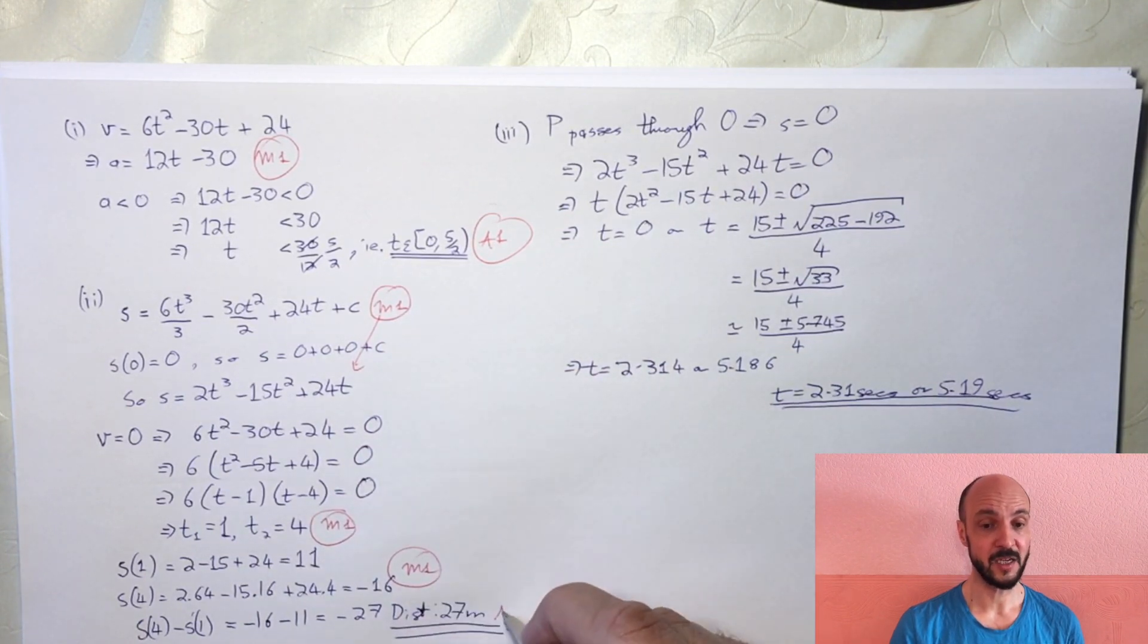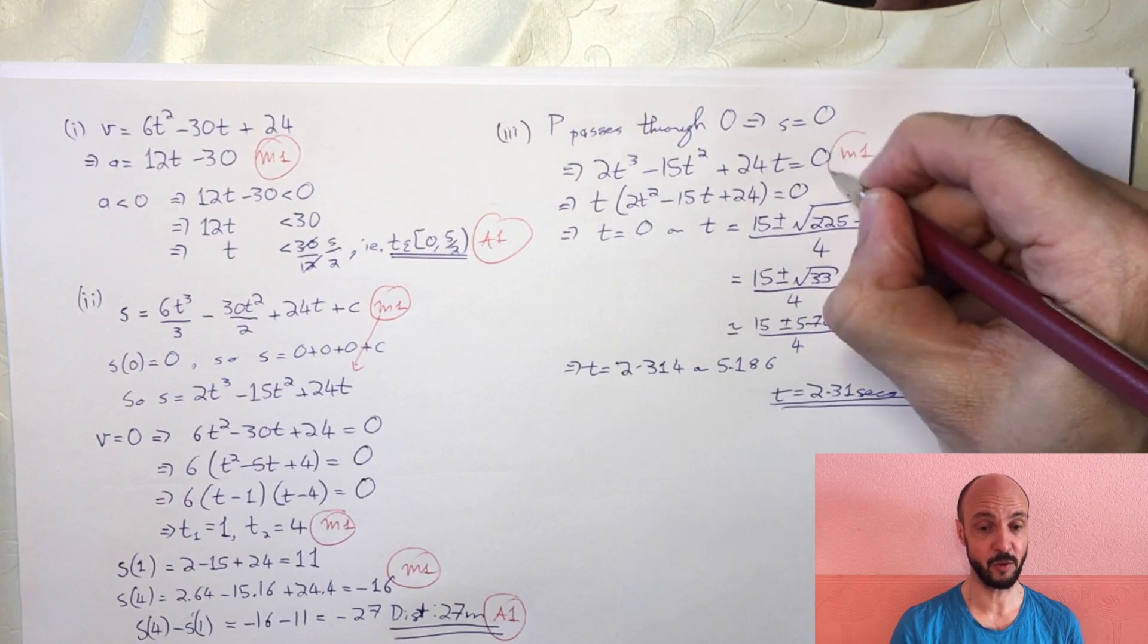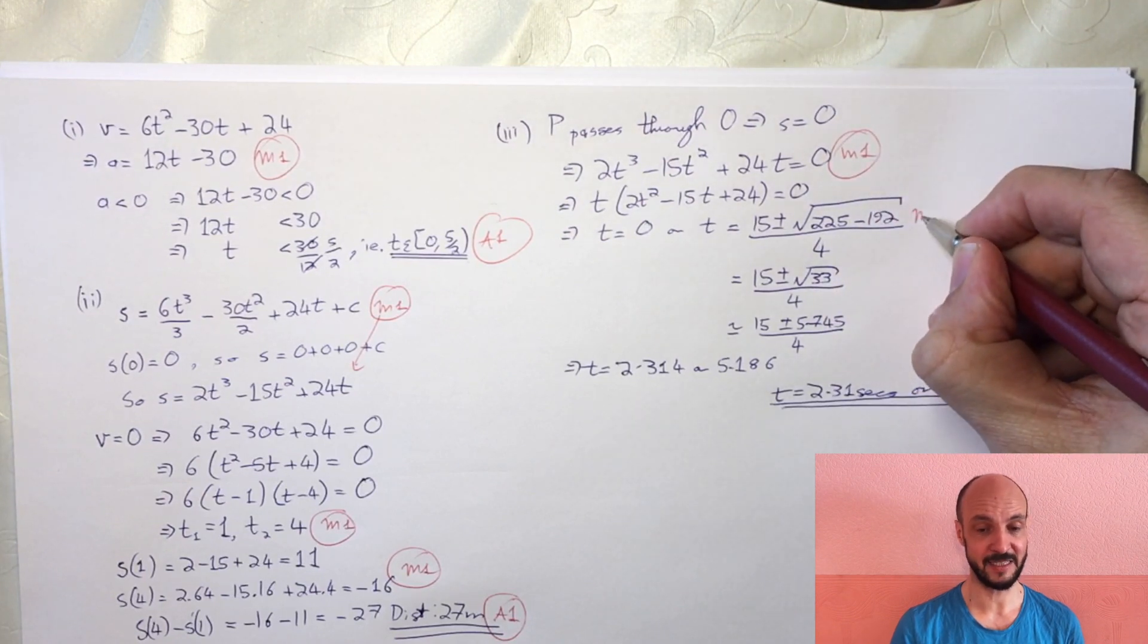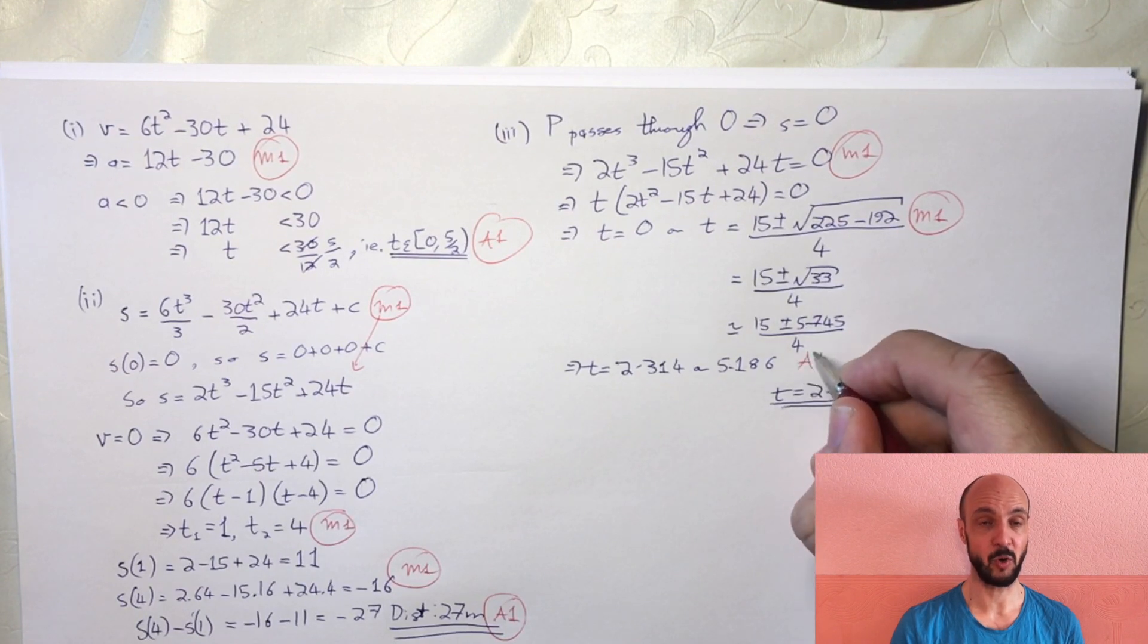In part 3, there's a method mark for setting the distance equation to 0, a method mark for using the quadratic formula, and an accuracy mark for the correct times 2.31 seconds and 5.19 seconds.